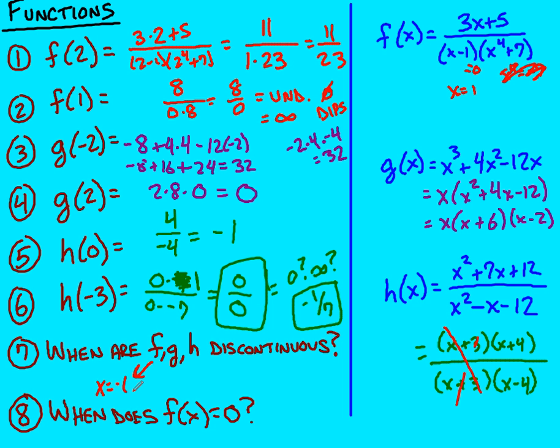Okay, g. When is this discontinuous? When you have domain issues, is what you should be thinking. Well, that never happens here, because there's no number that I'm unable to plug into this function. I'm never dividing by zero. So this is always a continuous function for g.